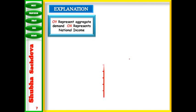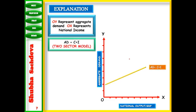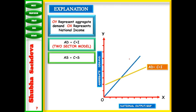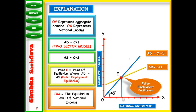Let us explain this with a diagram. On the Y-axis we have taken aggregate demand and aggregate supply; national income is on the X-axis. Aggregate demand always starts from the positive Y-axis. Aggregate supply starts from the origin and makes a 45-degree angle — it is the addition of consumption and savings. The equilibrium point E shows full employment equilibrium where AD equals AS, and OM is the equilibrium level of national income.